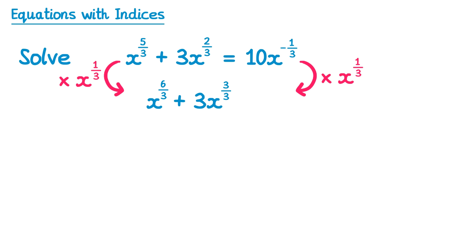And finally, we do 10x to the power negative one third times x to the one third, so we do negative one third add one third, which is zero, so 10x to the power zero. This simplifies really nicely: 6 divided by 3 is 2, and 3 divided by 3 is 1 — but we never really write the power 1 — and x to the power 0 is 1, so it's just 10.